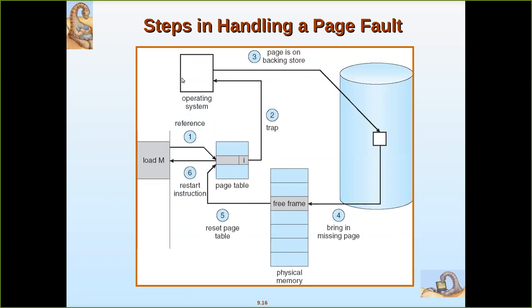When a page fault occurs, the operating system initializes IO. It reads the respective page from secondary storage and places it into physical memory. Before placing it, it checks for a free frame, getting the free frame list from the operating system. The page read from secondary storage is placed into one of the free frames, and the frame number is updated in the page table. The valid-invalid bit is then set to valid since the page is now present in main memory.